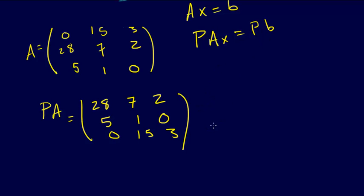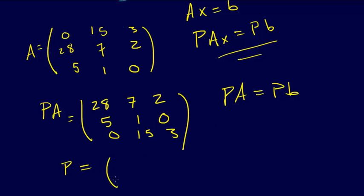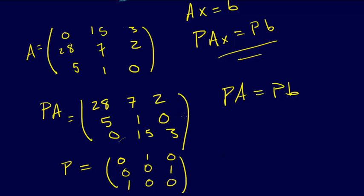We also need to apply P to B, so we're actually changing the problem — we're solving PAX = PB. That may then be an easier problem. In this case we can figure out that P would equal the permutation matrix with rows: [0, 1, 0], [0, 0, 1], [1, 0, 0]. You can multiply that out and see we get just what we want, and multiplying by B changes it accordingly. Then we've got a problem we can solve. That is Gaussian elimination with pivoting.